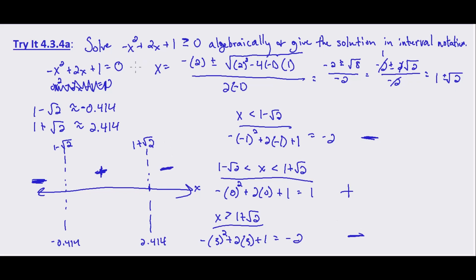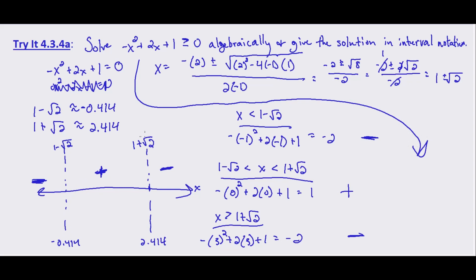So negative x squared plus 2x plus 1 is greater than or equal to 0 between 1 minus root 2 and 1 plus root 2. Since the inequality includes equals, the interval is inclusive. In interval notation, that is a closed bracket, 1 minus the square root of 2, 1 plus the square root of 2, closed bracket.